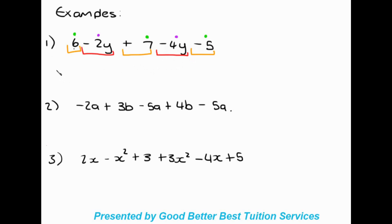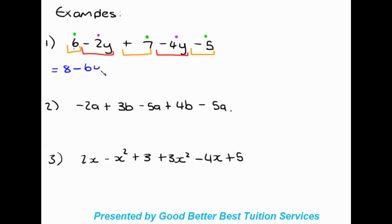Now that we've done that, we can add and subtract like terms as our final step. So 6 plus 7 gives me 13, minus 5 gives me 8. You can see that with isolating the terms we know this is plus 7 and this is minus 5. Then we have minus 2y minus 4y. The signs are the same, so we keep the sign and add the numbers: 2 plus 4 gives me 6, so it's minus 6y as our final answer.